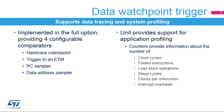The embedded data watchpoint trigger provides four comparators configurable as a hardware watchpoint, ETM trigger, PC sampler, or data address sampler. It provides the necessary information for data tracing and system profiling analysis, for which it embeds counters for counting the number of clock cycles, load and store operations, sleep cycles, clocks per instruction, and also information about interrupt overhead.